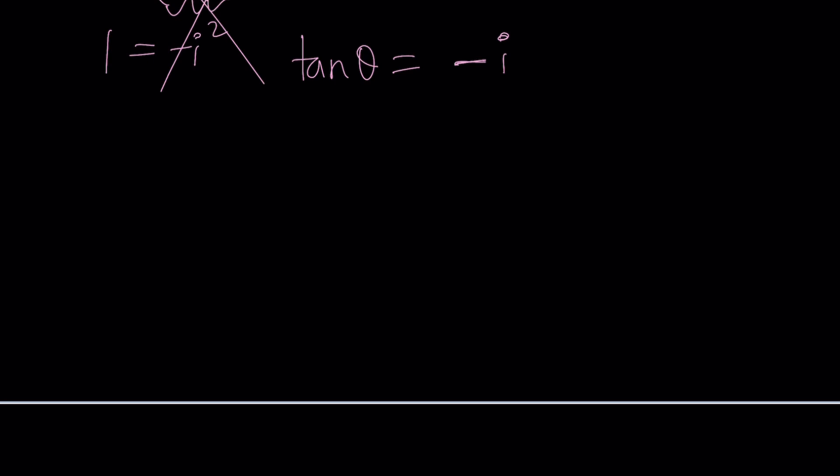We need to consult a formula or look at a triangle. If tangent theta is negative i, this is an imaginary triangle. This will be negative i, this will be one. From Pythagorean theorem, this will be zero. Uh-oh, Houston, we have a problem. Cosine is going to be undefined. If cosine is undefined, tangent can't be that, which means tangent can never be negative i. So that answers the question. Can tangent be anything? No, it can't be negative i.